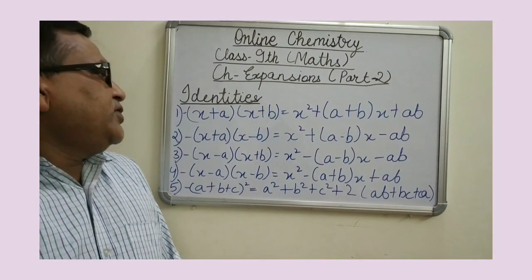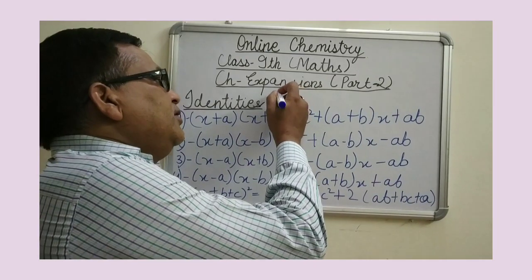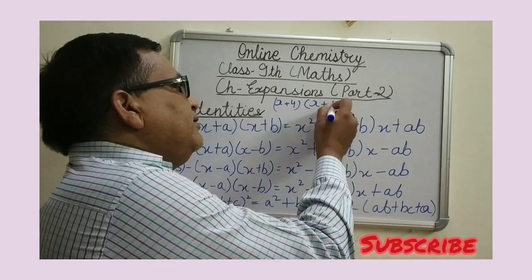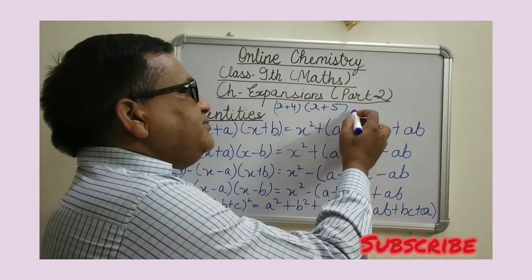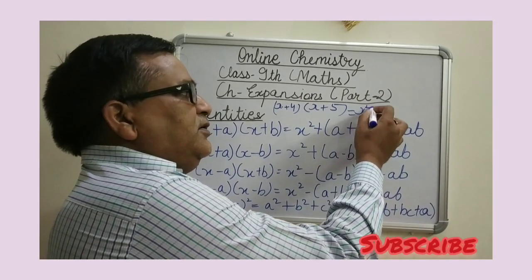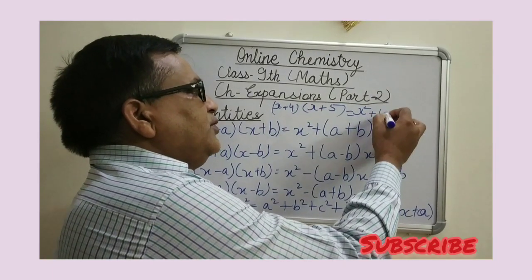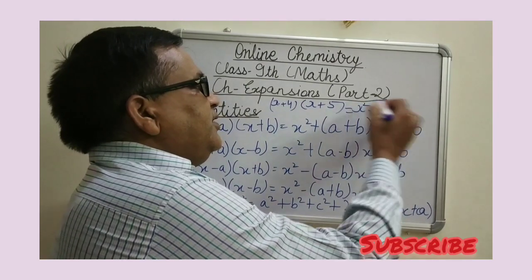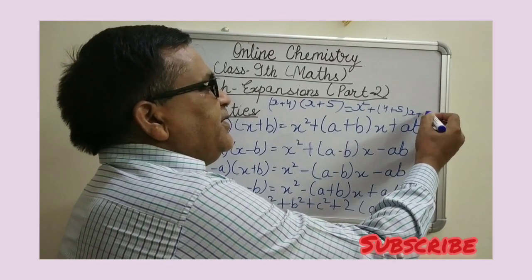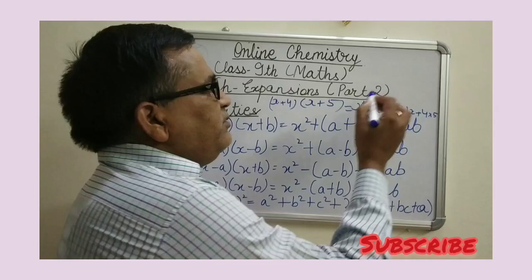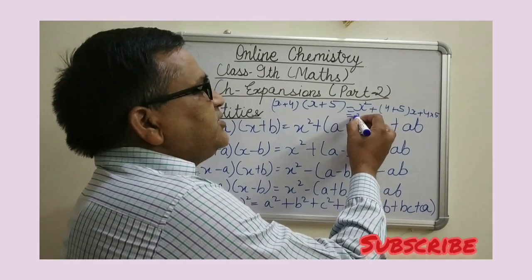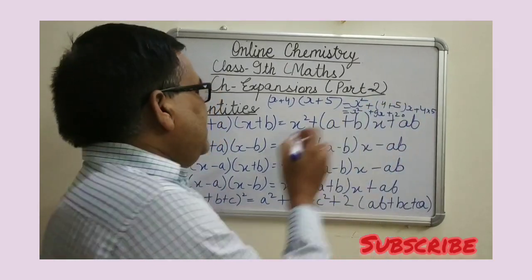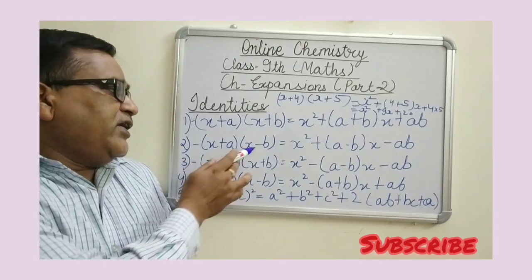For example, x plus 4 into x plus 5. We compare: a is equal to 4, b is equal to 5. Putting in the values — a plus b is 4 plus 5, and ab is 4 into 5. By solving we get the answer: x squared plus 9x plus 20.